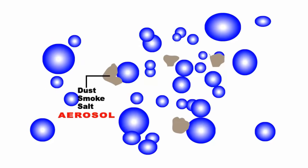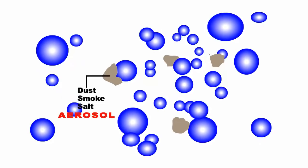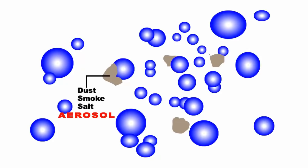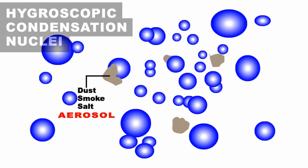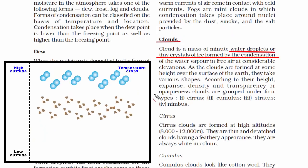Another thing to understand is that air also contains tiny minute particles of dust, smoke, and salt, which are known as aerosol. These are given the term hygroscopic condensation nuclei. These aerosol have an amazing property of attracting water molecules in the air, so water vapor gets attracted to aerosol and sticks to these tiny particles. Since aerosol or hygroscopic condensation nuclei are present in the atmosphere in huge quantities, they become the surface for water vapor to condense onto when temperature is low.